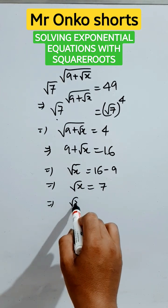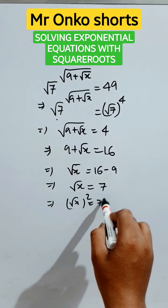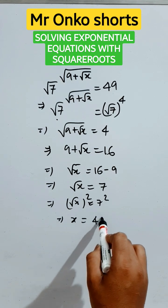Now, we will take square in both sides. That will be root x whole square equals to 7 square. Ultimately, it is x equals to 49.